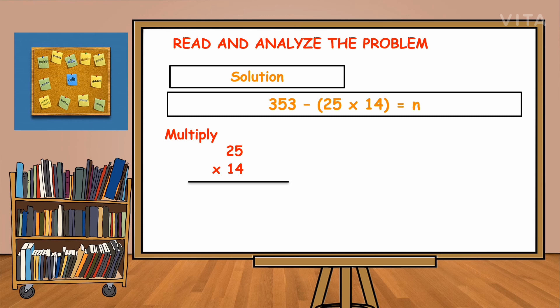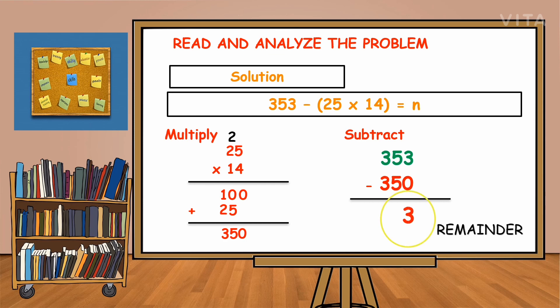The dividend is 353 minus the product of 25 and 14 to get the remainder. The number sentence is 353 minus the product of 25 and 14 equals n. Let us perform the multiplication first. We need to multiply 25 by 14. Using your knowledge of multiplying 2 digits by 2 digits: 5 times 4 is 20, then 4 times 2 is 8 plus 2 is 10. Then 5 times 1 is 5 and 2 times 1 is 2. Add the partial products. We have 350. We will subtract 350 from 353. The answer is 3. So 3 is the remainder.